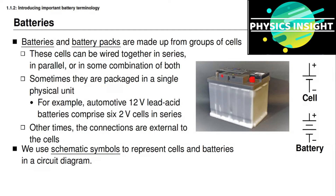When we draw an electrical circuit that includes either a cell or battery, we use schematic symbols to represent them in the circuit diagram. The symbol for a battery looks like two cell symbols connected together, but this specific battery symbol is used without change regardless of how many cells are actually connected together.